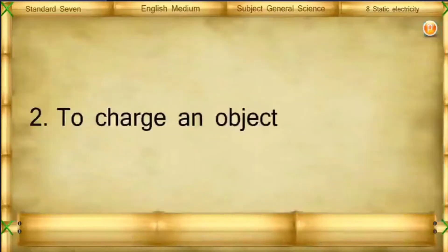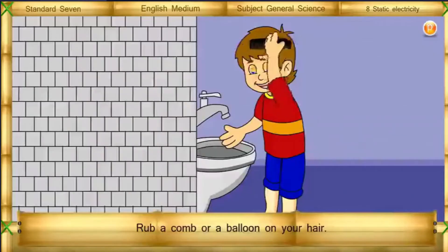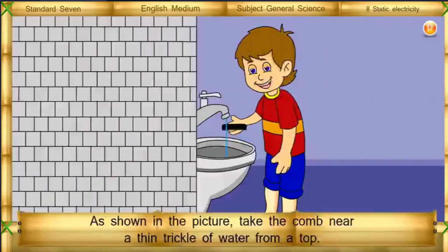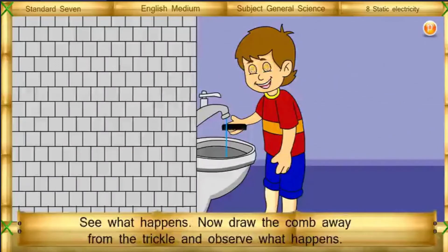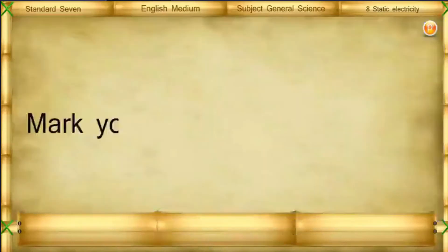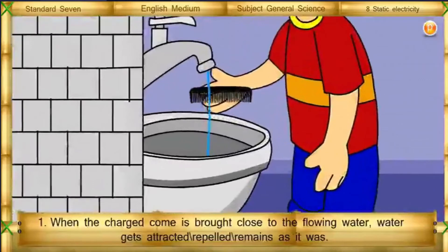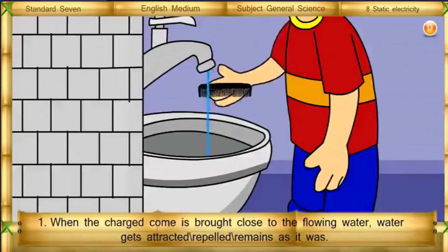To charge an object by induction: Rub a comb or a balloon on your hair. Take the comb near a thin trickle of water from a tap. See what happens. Now draw the comb away from the trickle and observe what happens. Mark your observation: when the charged comb is brought close to the flowing water, does the water get attracted, repelled, or remain as it was?